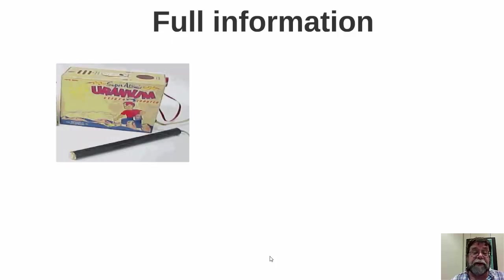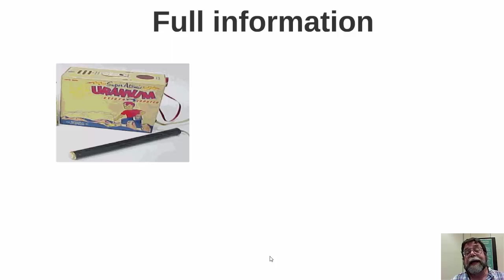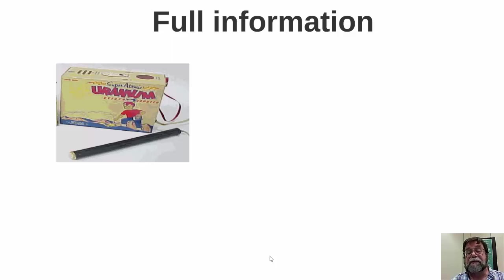In the 1950s, one toy being sold was a uranium detector kit, where parents would buy kits containing samples of uranium ore and Geiger counters. Children would hide radioactive materials in the home, and the lucky child would find them using the Geiger counter. Parents who bought this were probably not fully aware of the risks associated with uranium and radiation — nor, for that matter, was the company selling it.